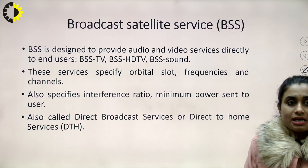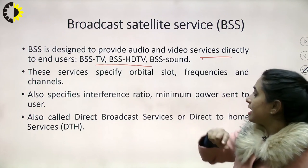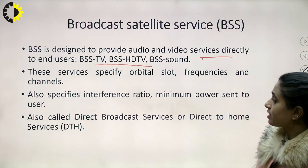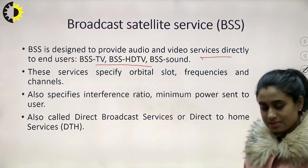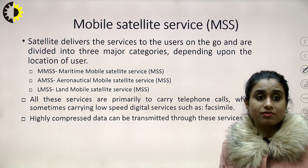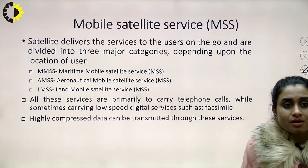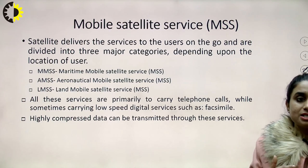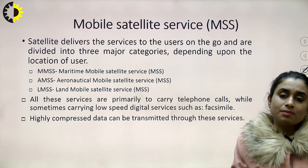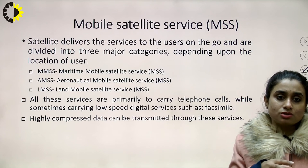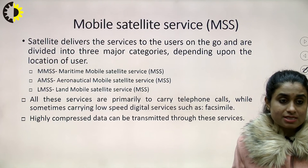BSS — Broadcast Satellite Services — is basically used to provide audio and video services directly to end users, such as HDTVs. These services specify orbital slots, frequencies, channels, interference ratio, and minimum power sent. MSS — Mobile Satellite Services — delivers services to users on the go when they are moving. MSS is further categorized as Maritime Mobile Satellite Service, Aeronautical Mobile Satellite Service, and Land Mobile Satellite Services. These were primarily made to carry telephone calls and later switched to transmitting highly compressed data.